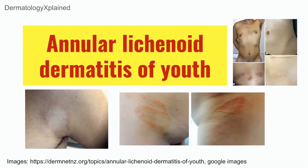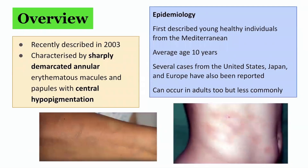Welcome to Dermatology Explained. The topic for today's presentation is Annular Lichenoid Dermatitis of Youth. This is a recently described condition, reported in 2003. It is characterized by sharply demarcated annular erythematous macules and papules with central hypopigmentation. It was first described in young healthy individuals from the Mediterranean region, with an average age of 10 years.